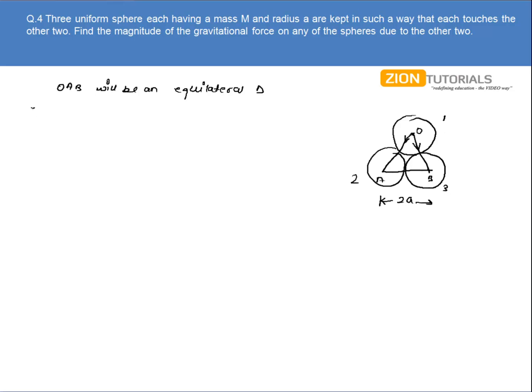So the magnitude of 1 due to 2 will be given by G into M into M by 2A square. That is GM square by 4A square.